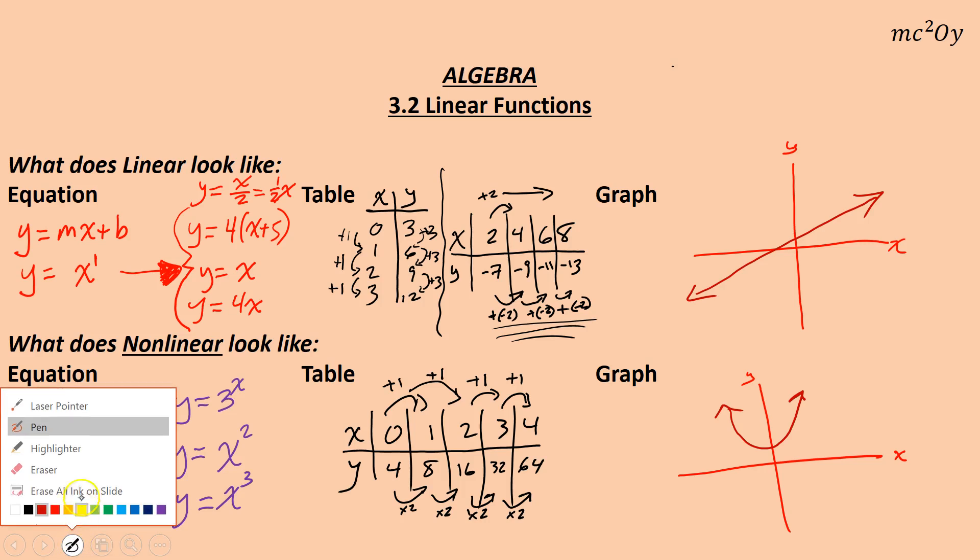And just so we know, this graph right here, let me draw another x, y axis here. This graph is not linear. I know it has straight lines, but it has a turning point called a vertex. This is not linear. So these are pictures of lines or graphs that are not linear, whereas the top one is linear.